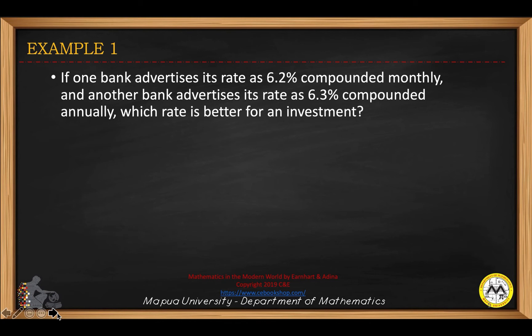If one bank advertises its rate as 6.2% compounded monthly, and another bank advertises its rate as 6.2% compounded annually, which rate is better for an investment? If you are the investor, we will choose the one with the higher interest rate.